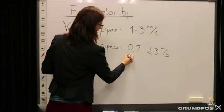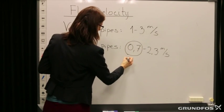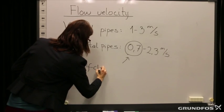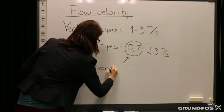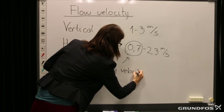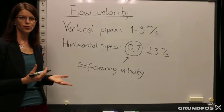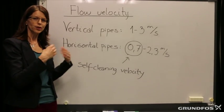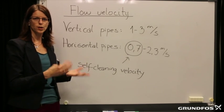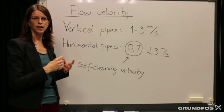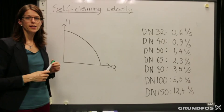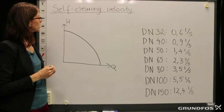The 0.7 meters per second we also call the self-cleaning velocity, because with this flow you will clean the pipes from sand, particles, and other contents in the wastewater. Now we will dig a little bit more into the self-cleaning velocity.